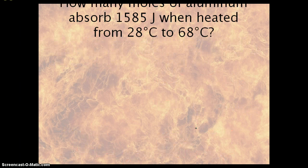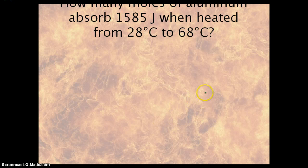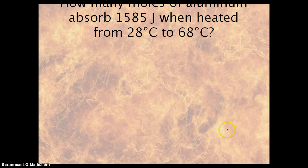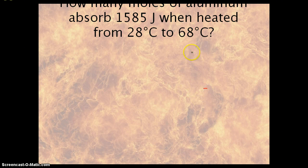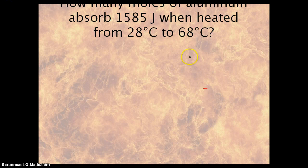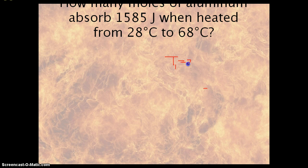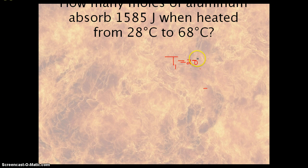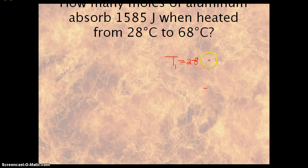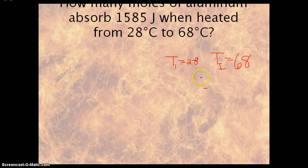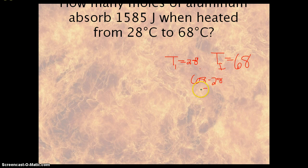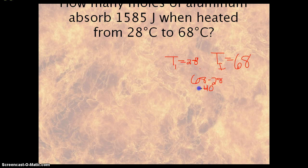Let's look at the next one. How many moles of aluminum absorb 1,585 joules when heated from 28 degrees to 68 degrees? We know our T initial is 28, and T final is 68. So we can do T final minus T initial: 68 minus 28 gives us a change in temperature of 40, our delta T.